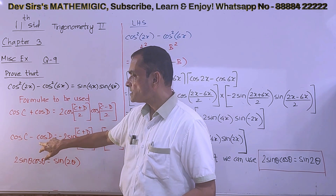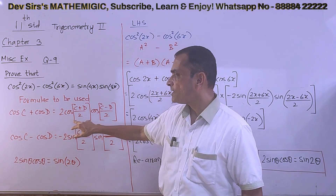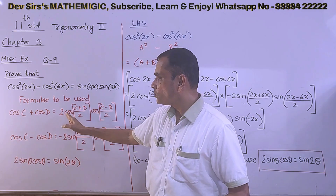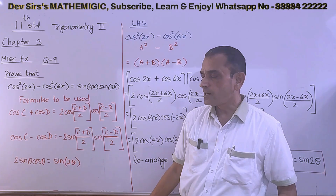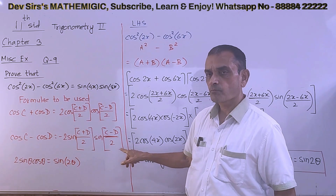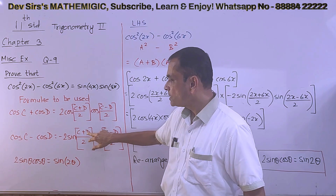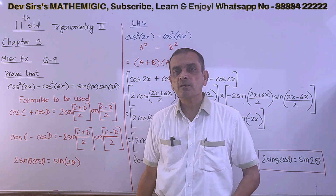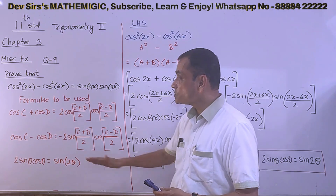The first formula is cos C plus cos D, and the second is cos C minus cos D. If you get cos C plus cos D, the right-hand side is 2 cos into cos. If you get cos C minus cos D, the right-hand side is minus 2 sin into sin. Under the brackets: C plus D upon 2, and C minus D upon 2. Both of these are called factorization formulae — there are four, and we are going to use two of them.